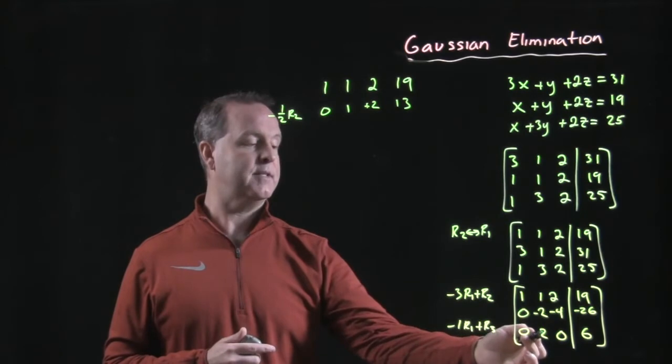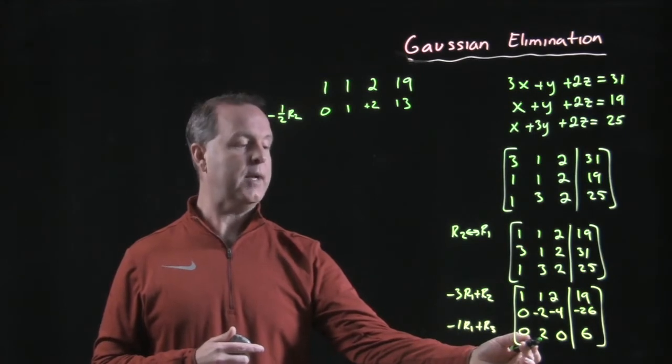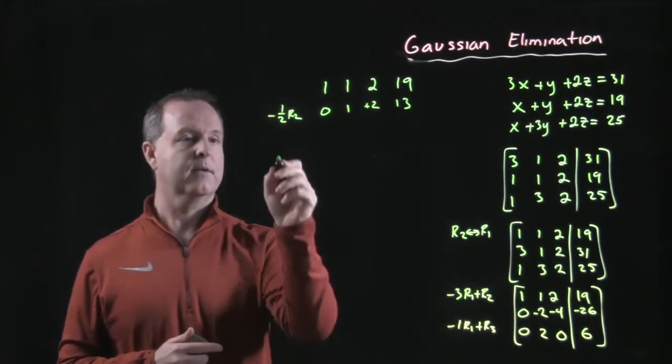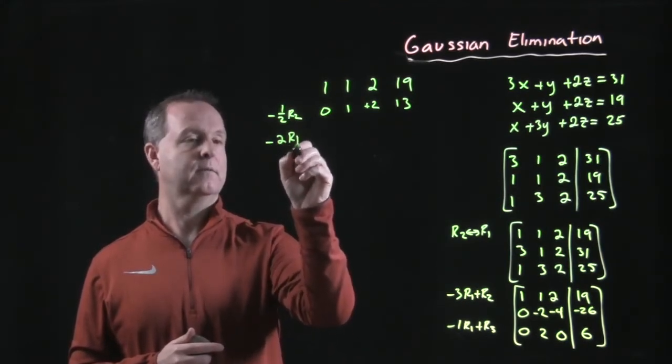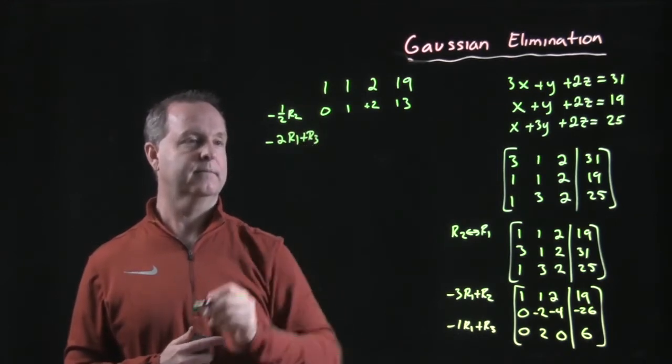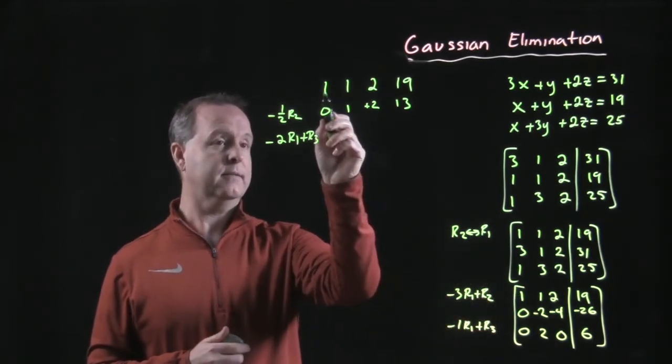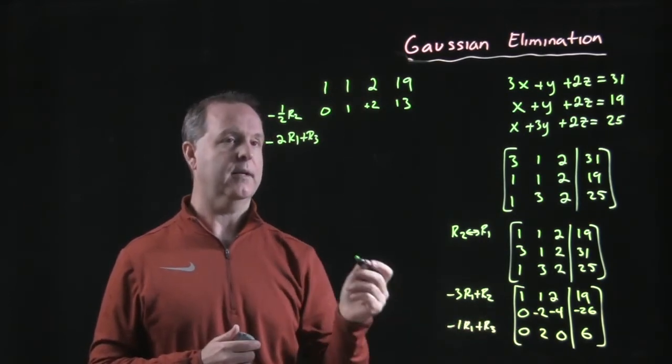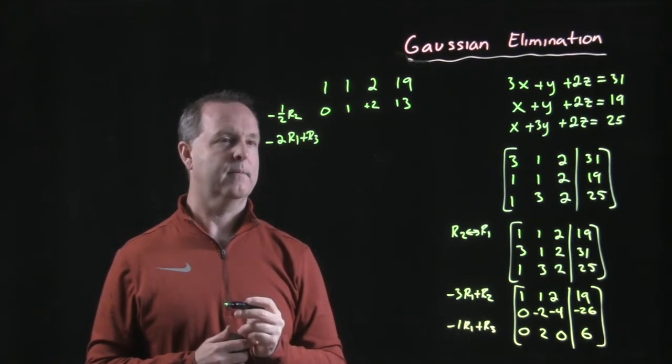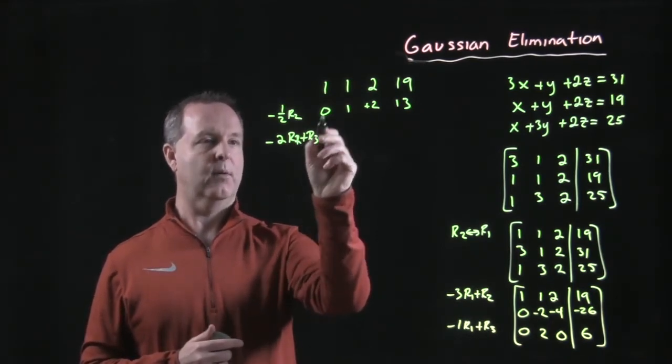And then I need to have a zero in this spot underneath of that. So is there an operation I can do right now? Sure, we can scale row two. So let's multiply row two by negative two and add it to row three. Negative two times row two, so negative two times one is negative two. I can't do that to row three, can I? I need to do it to row two. So my new row two.